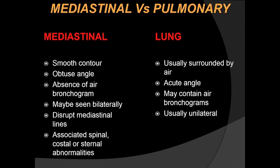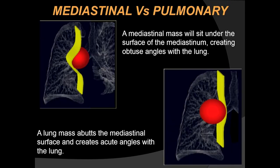In mediastinal lesions, there is absence of the air bronchogram; they may be seen extending bilaterally, they may disrupt the mediastinal lines we described, and they may have associated spinal or costal or sternal abnormalities. Whereas lung lesions are usually surrounded by air, form an acute angle with the surface, may contain air bronchograms, and are usually unilateral.